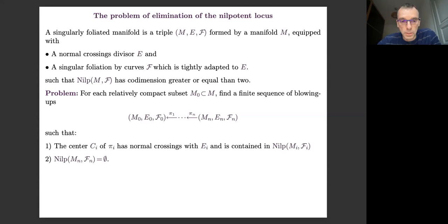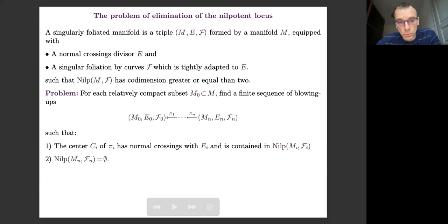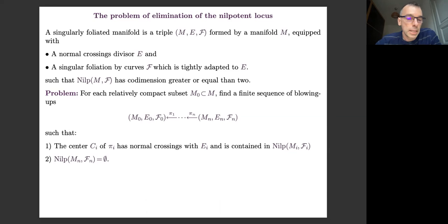The idea, generally speaking, is to use algebra — to use a resolution of singularities to simplify as much as possible your foliation, and then apply more analytic tools like normal form theory and the study of small divisor problems. That is the goal.